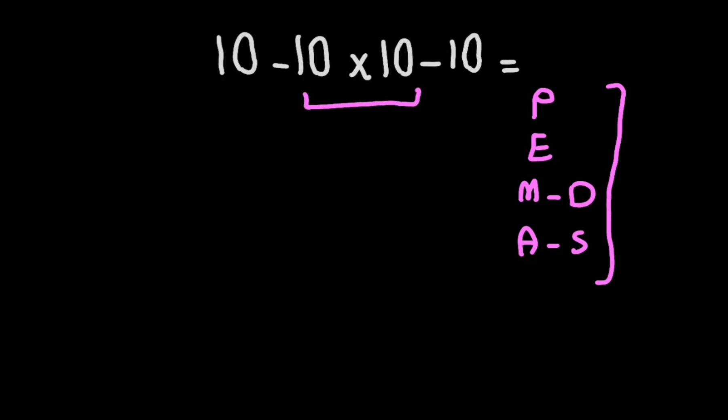Now 10 times 10 gives us 100. Now let's rewrite the expression. We have 10 minus 100 minus 10.